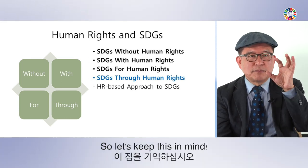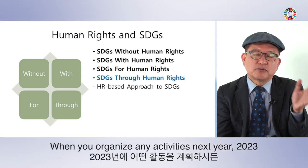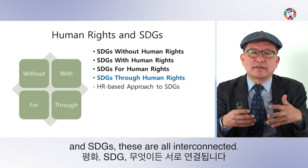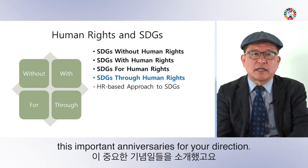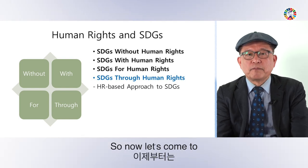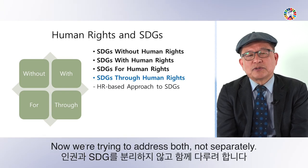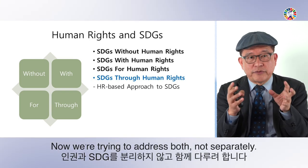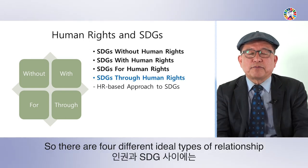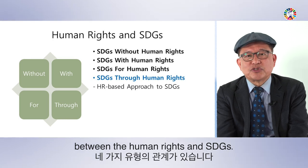Let's keep this in mind. When organizing activities in 2023 — whether human rights, peace, or SDG — these are all interconnected. That's why I'm introducing these important anniversaries for your action. Now let's come to the substantive issue. We're trying to address both human rights and SDG — not in silos separately. There are four different ideal types of relationship between human rights and SDGs.